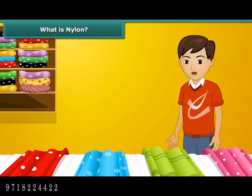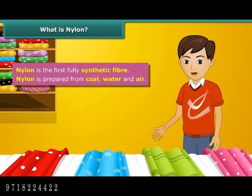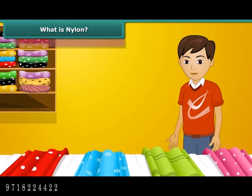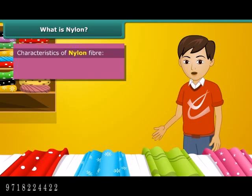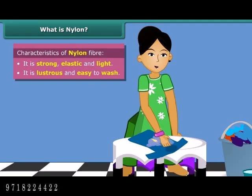Do you know what the first fully synthetic fiber is? It is nylon. The very first nylon product was a toothbrush with bristles. Nylon is so popular for making clothes because nylon fiber is strong, elastic, light, lustrous, and easy to wash.